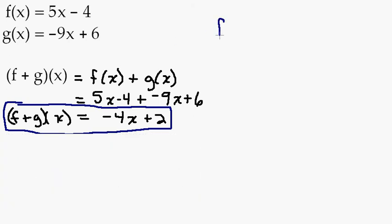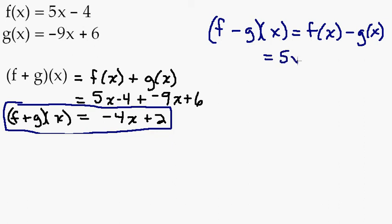f of x, if you were asked to find f minus g of x, what you would want to do is do f of x minus g of x. Now you'd want to be careful here with the minus because you'd have to distribute a negative. So let's go ahead and go through that. f of x is 5x minus 4 still. I'll put that in parentheses this time. Minus g of x is negative 9x plus 6.